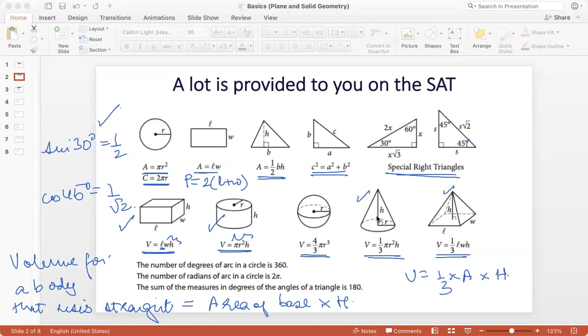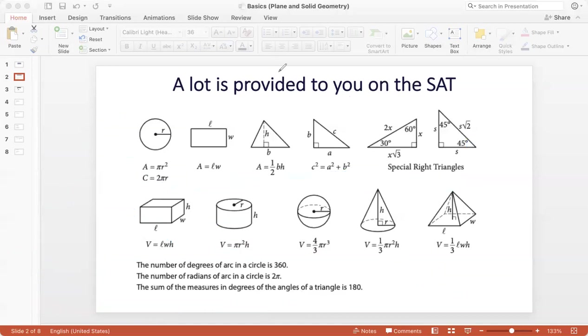Area of the base is pi R squared multiplied by height and one third of that. Area of the base is LW multiplied by height and one third of that. So this is a general formula that you can use for bodies that rise straight and for bodies that converge at a point. And we'll be using it in one of the questions later.